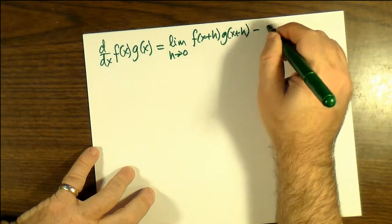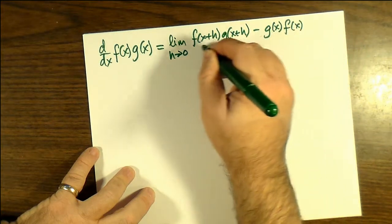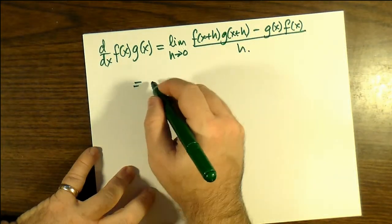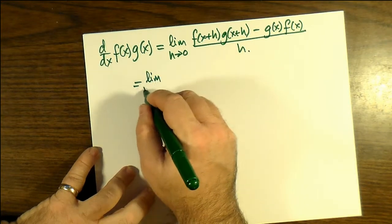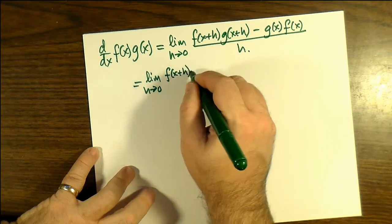On the numerator of the difference quotient we have f(x+h) times g(x+h) subtract g(x) times f(x), and divide it all by h, letting the limit of h approach zero. The trick here is that there doesn't appear to be anything you can do with that, except we're going to try to do something a little sneaky.